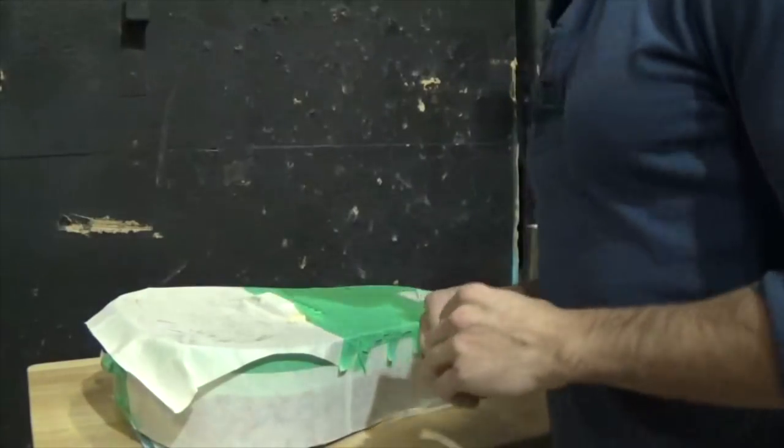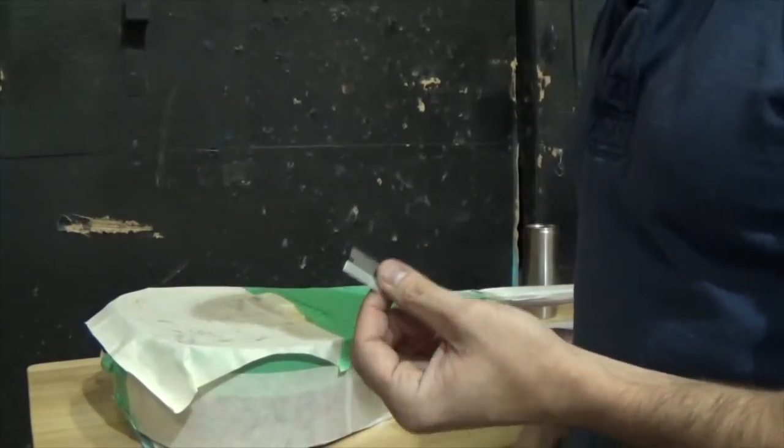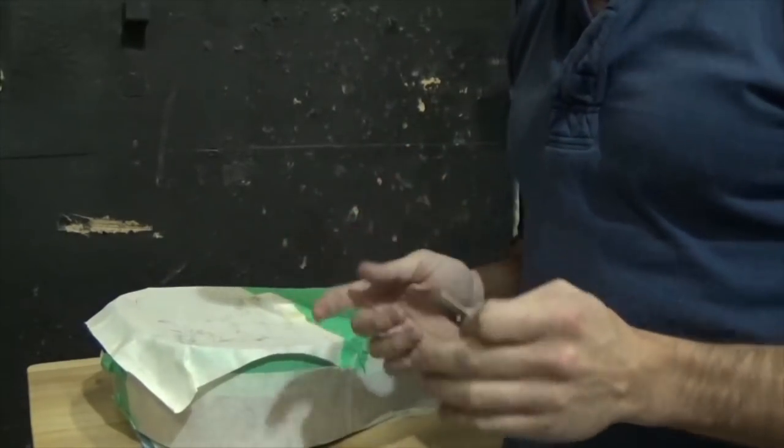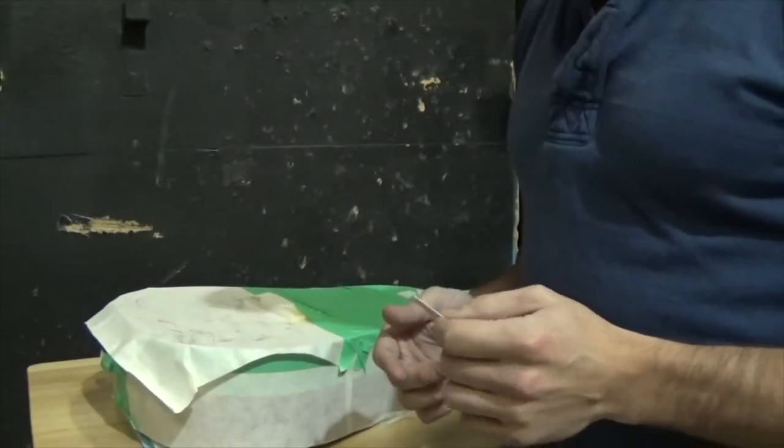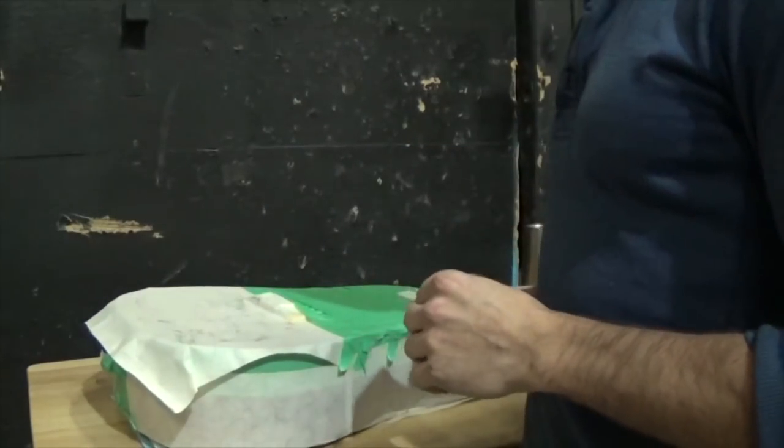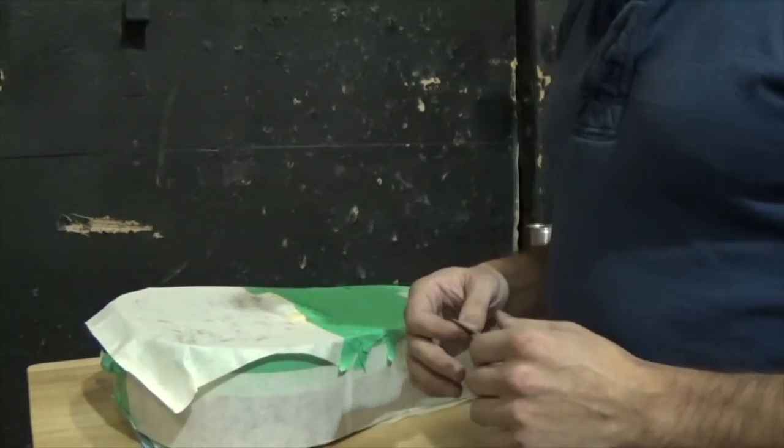Use very little pressure. If you have to go over a line twice to cut it, there's nothing wrong with that. Sometimes you'll cut through the paper but you won't quite separate the glue that's holding it onto the guitar. Just gently drag the blade over it again. That's not a problem.